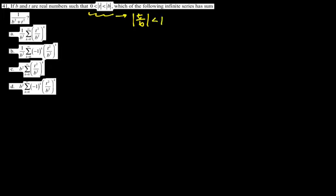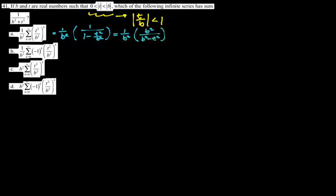For option A: the first term is 1/B², and the sum is (1/B²) over (1 minus T²/B²). This cleans up to give a sum of 1/(B² minus T²). The relevant thing here is that when we had T²/B², we ended up with B² minus T² in the denominator. Which means if A isn't the answer, then C also could not be the answer.